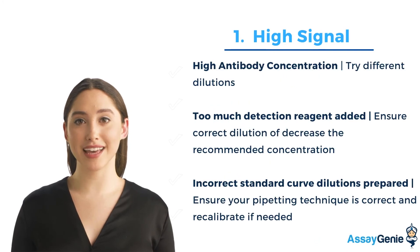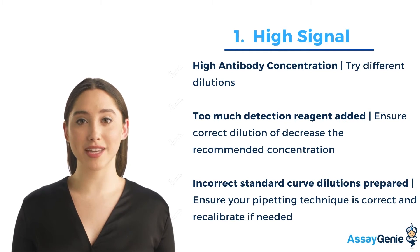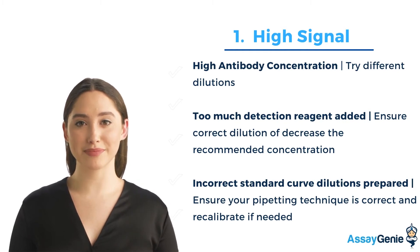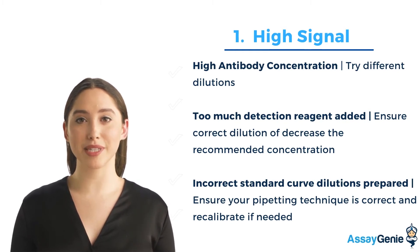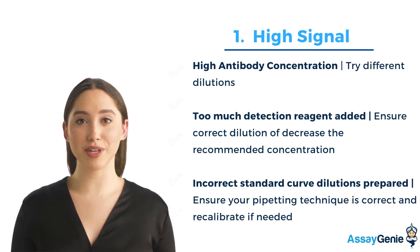High signal may occur for a number of reasons. If you have a high signal, this can result in false positives and incorrect data. High signal may be caused by high antibody concentrations, too much detection reagent, and incorrect standard curve dilutions.